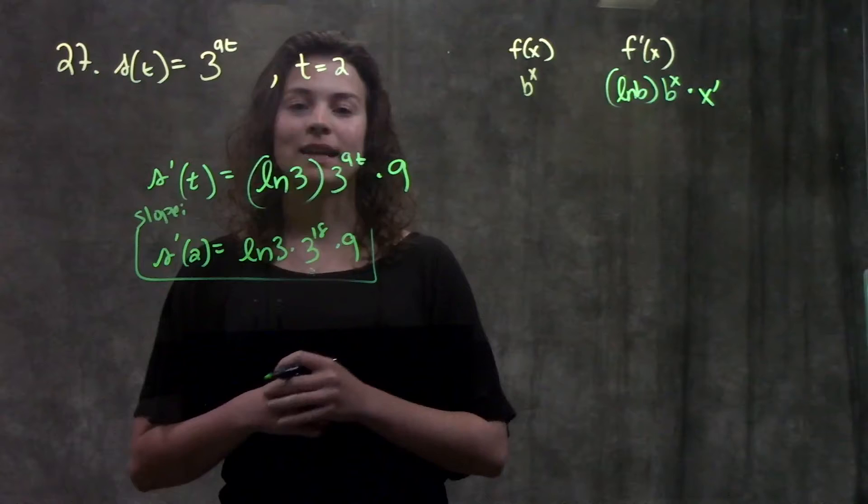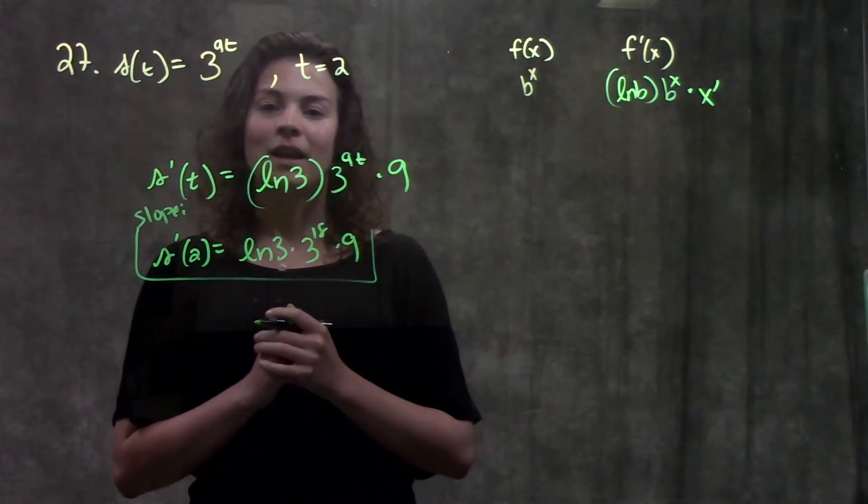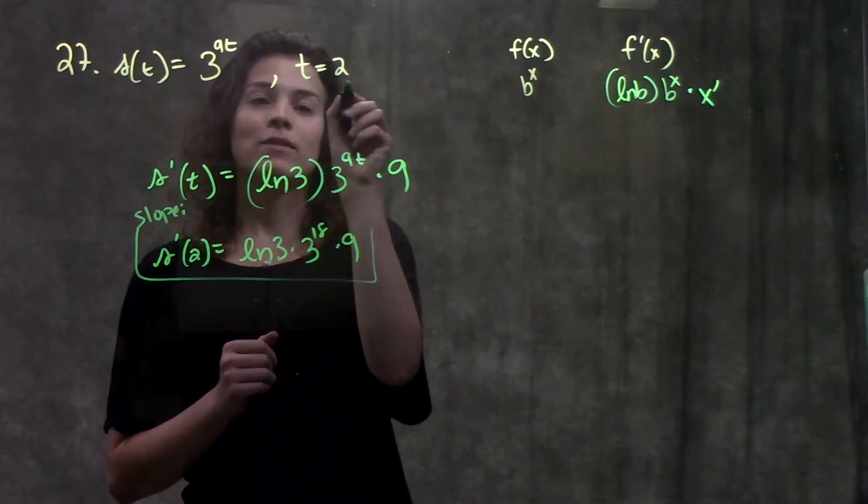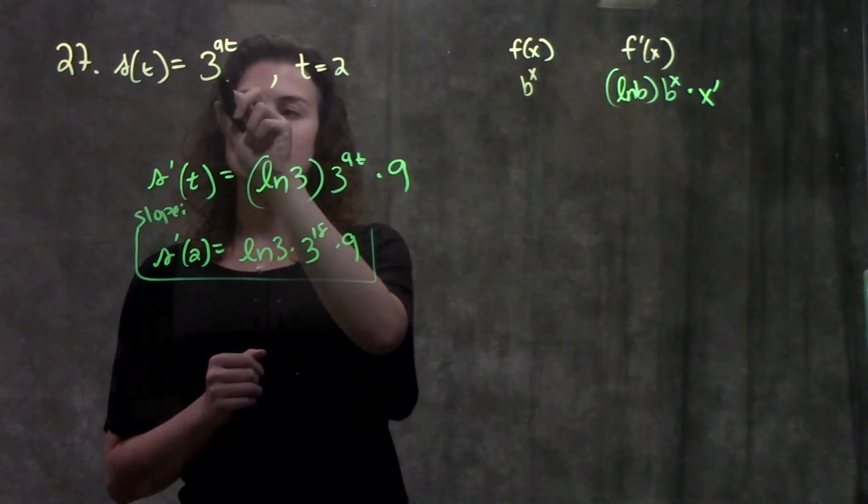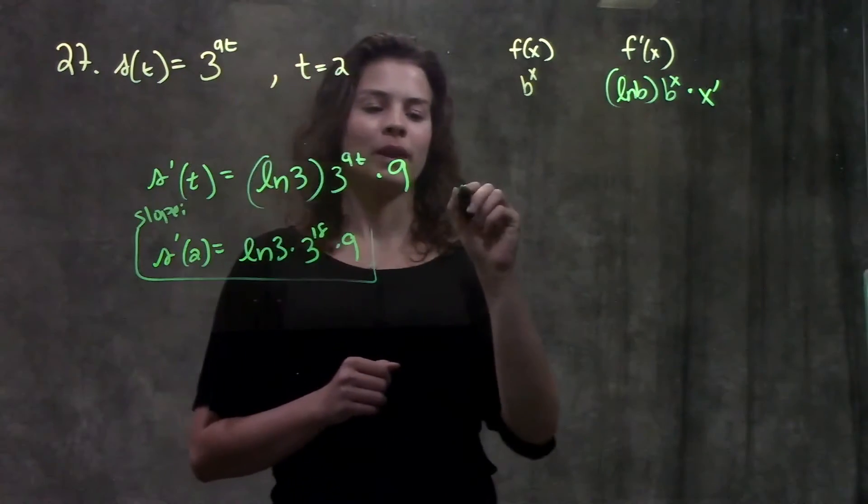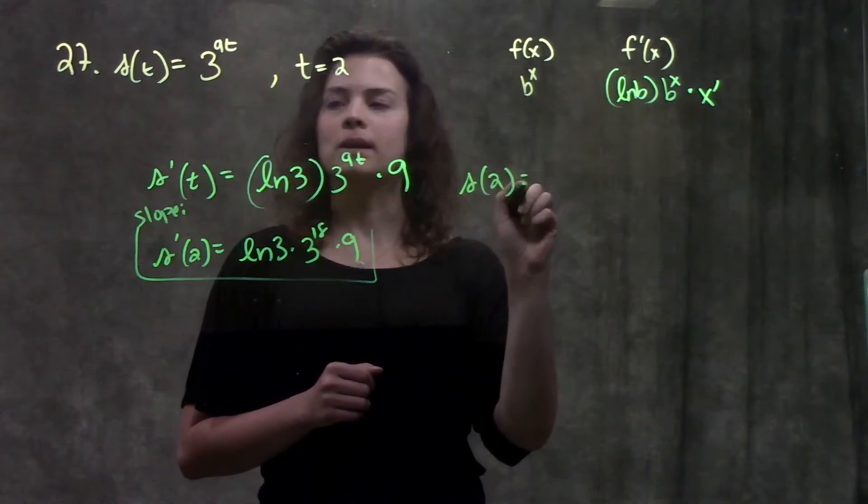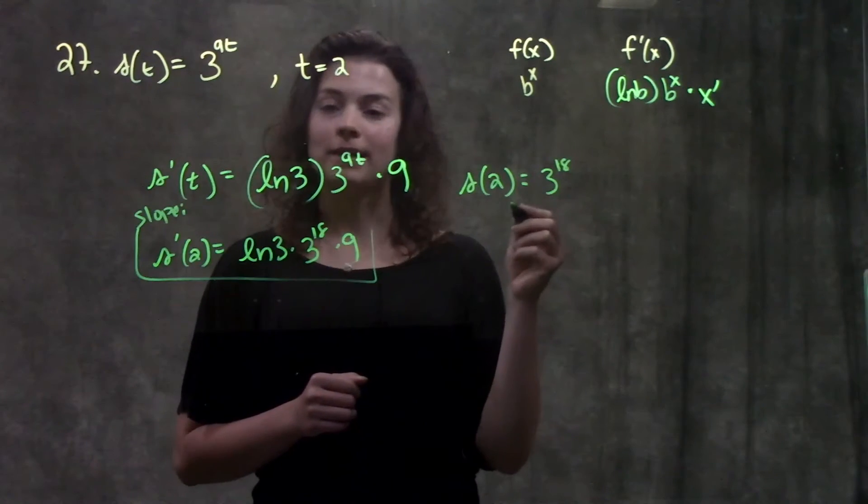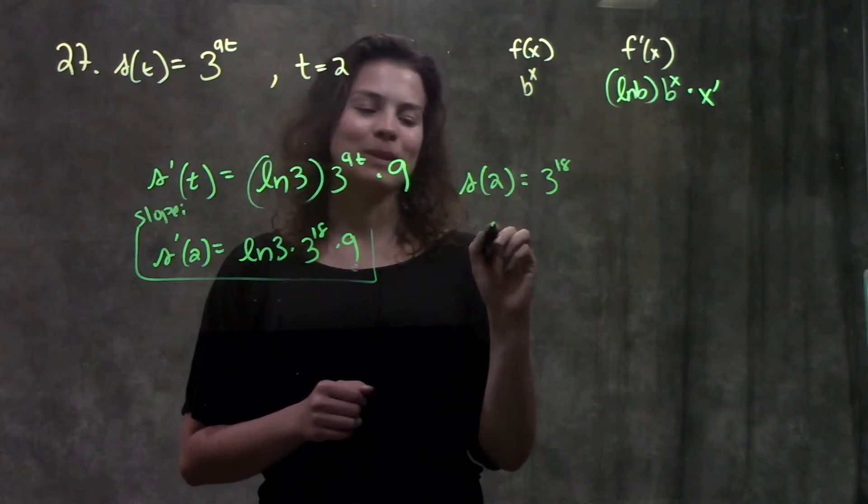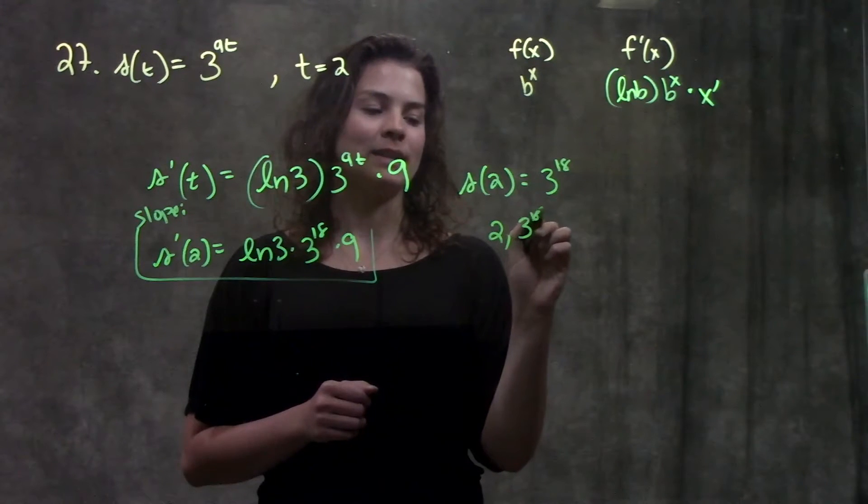I have my slope. Second thing I need is the point on the line. They've already given me the value t equals 2. I'm going to plug 2 into the function and see what my s(t) is. So s(2) becomes 3 to the 18. This gives me the point (2, 3 to the 18).